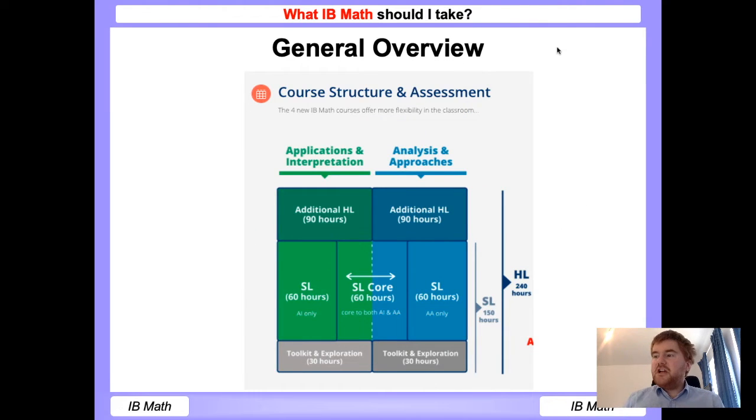One of the changes to IB Math now is that standard level is a subset of higher level. So there's not a separate high level and standard level course like before. This allows more flexibility within the classroom. For example, if you started doing application standard level and you're thinking maybe I should transfer across to applications higher level, it's much easier to do this now. You can just do the extra content required at applications higher level instead, likewise through analysis and approaches.